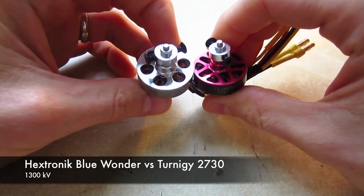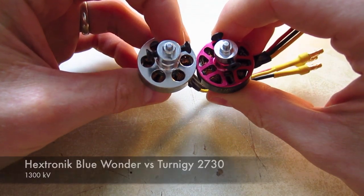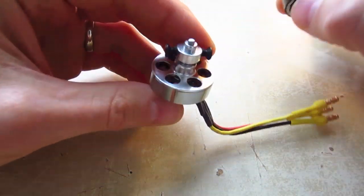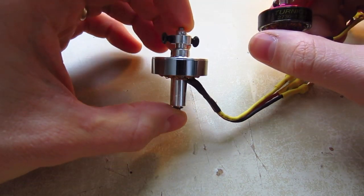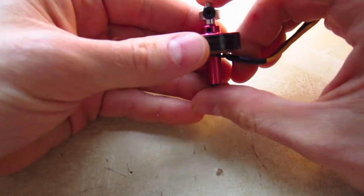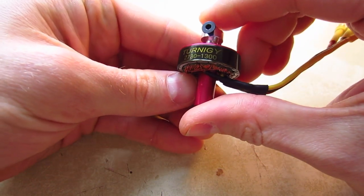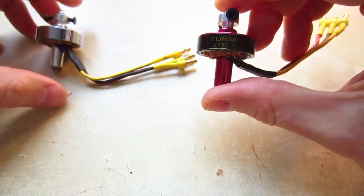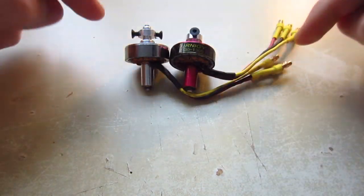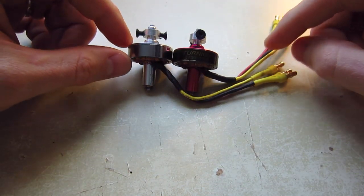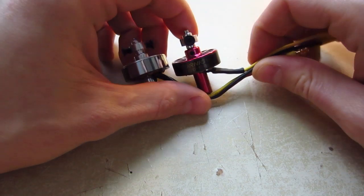These are both motors that I commonly use in my little park flyer planes and delta wings. This is the Hextronic 24 gram Blue Wonder at 1300 kV, and this is the Turnigy 2730 1300 kV. They're supposed to be very comparable motors. These weigh the exact same - both come in at exactly 28.9 grams.